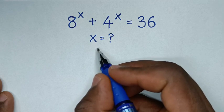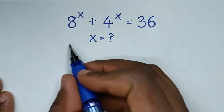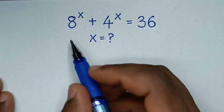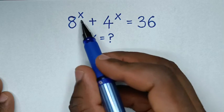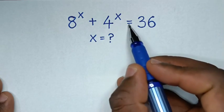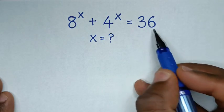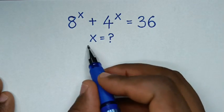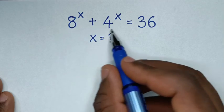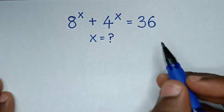Hello, you are welcome to solve this math problem, which is 8 power of x plus 4 power of x is equal to 36. We need to find the value of x from this equation.